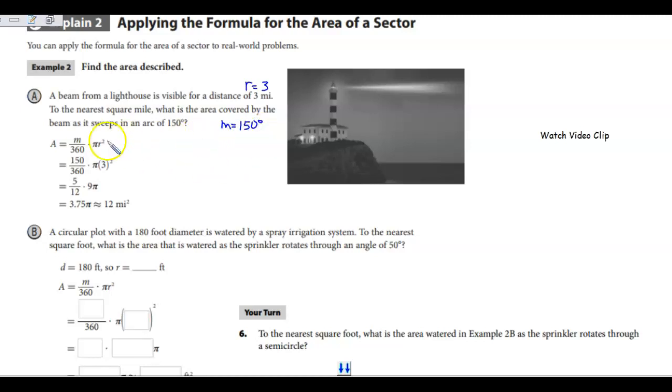We're going to take the 150, put it over 360, times pi times radius squared, which is 3. So 3 squared is 9, so we get 9 pi. Divide by 30 and got 5 over 12. Multiplied by 9, we get 3.75 pi, which is approximately 12 miles. It says to the nearest square mile, so we rounded it to the nearest whole.